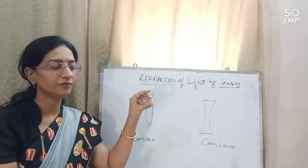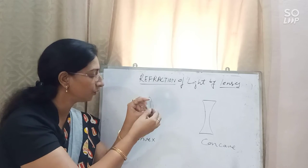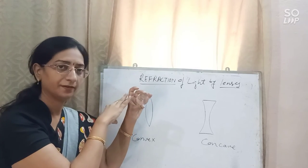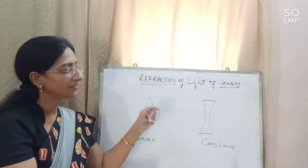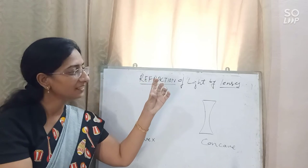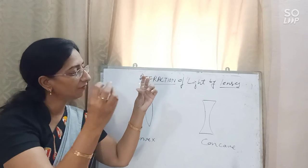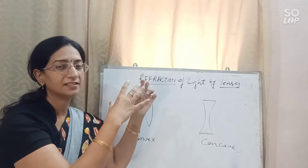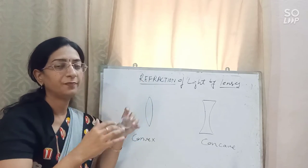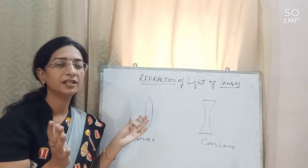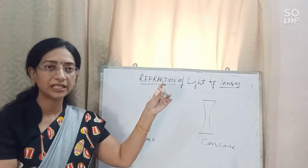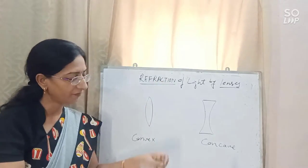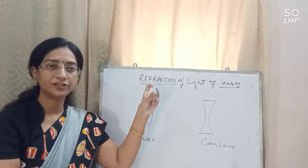The convex lens is a convergent lens — when a ray of light passes through it, all the rays converge at one focus point. The concave lens, when a ray of light passes through it parallel to the principal axis, spreads out in different directions. So the concave lens is a diverging lens and the convex lens is a converging lens.